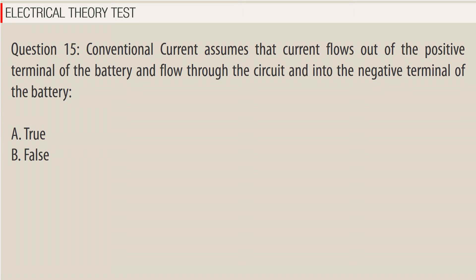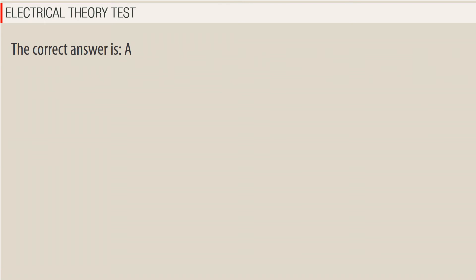Question 15. Conventional current assumes that current flows out of the positive terminal of the battery, and flows through the circuit and into the negative terminal of the battery. A. True. B. False. The correct answer is A — True.